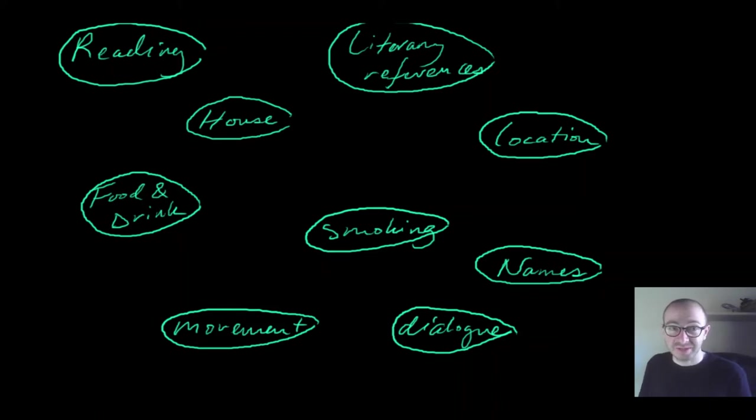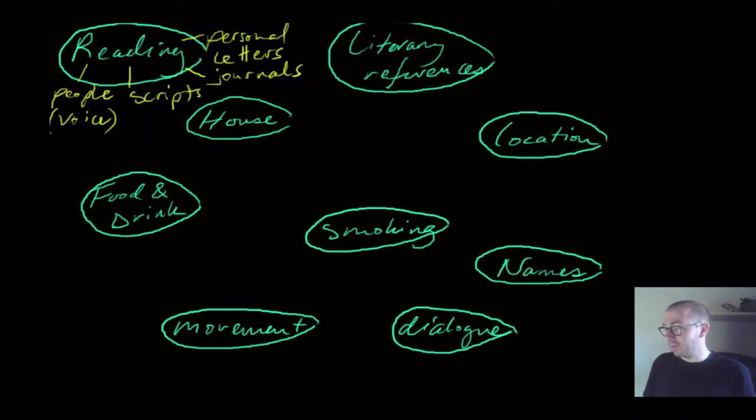There's multiple different types of reading in this story. There is the reading of people and their voices and their physicalities. There's the reading of personal letters and journals. There's the reading of scripts. These are quite interesting because when we're thinking about who is doing this, it's Zooey. And Zooey, in this case, is reading not just passively or just for fun. He's reading because he's studying roles.